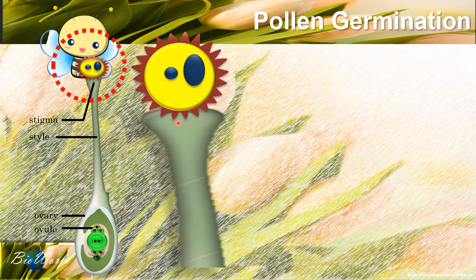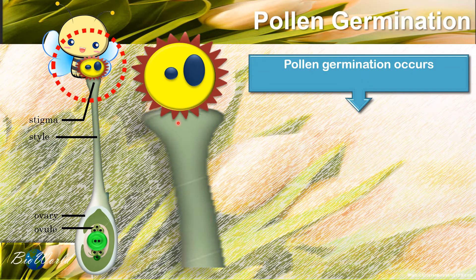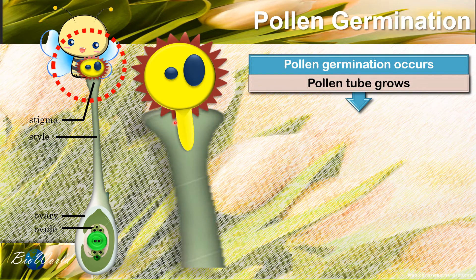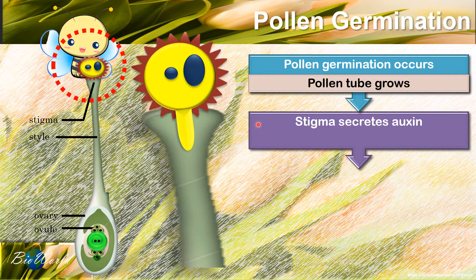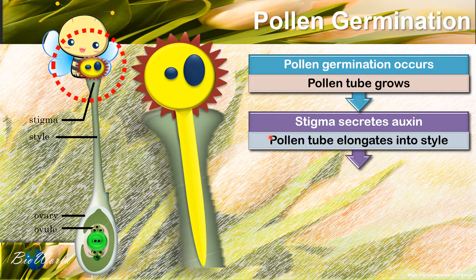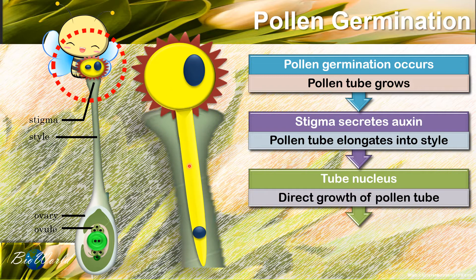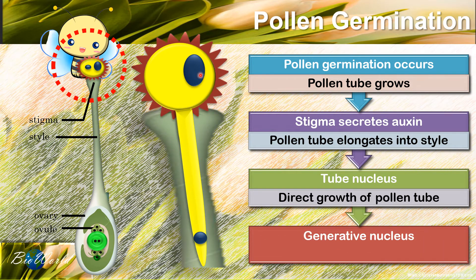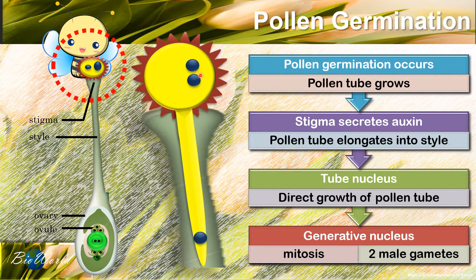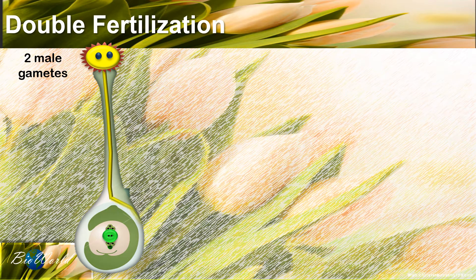Let's look at what happens at the stigma after this. Once the pollen grain touches the stigma, the pollen grain will begin pollen germination — this is when a pollen tube starts to grow. The stigma in response will secrete auxin which will help to elongate the pollen tube. The tube nucleus will help direct the growth of the pollen tube, while the generative nucleus will carry out mitosis to produce two haploid male gametes.